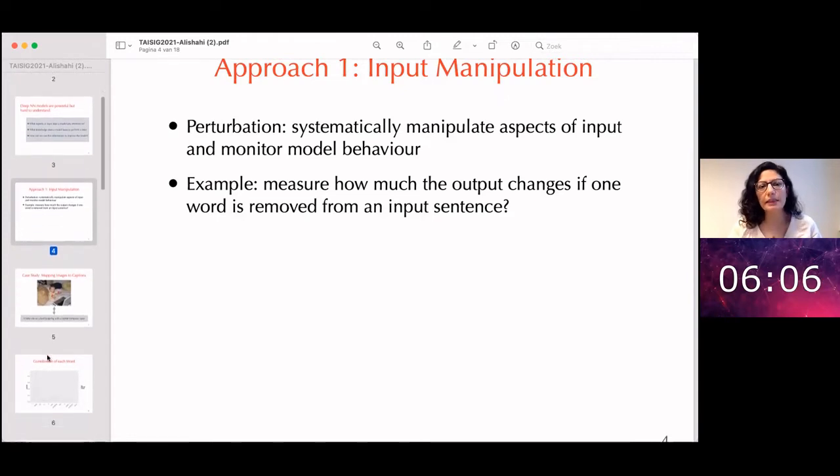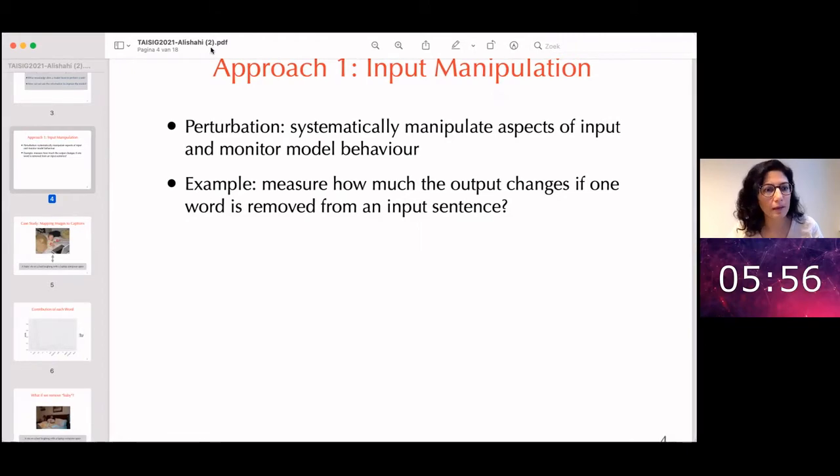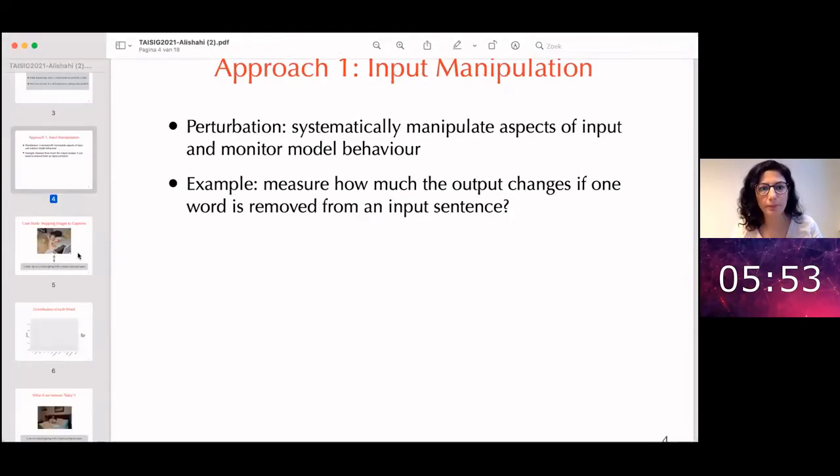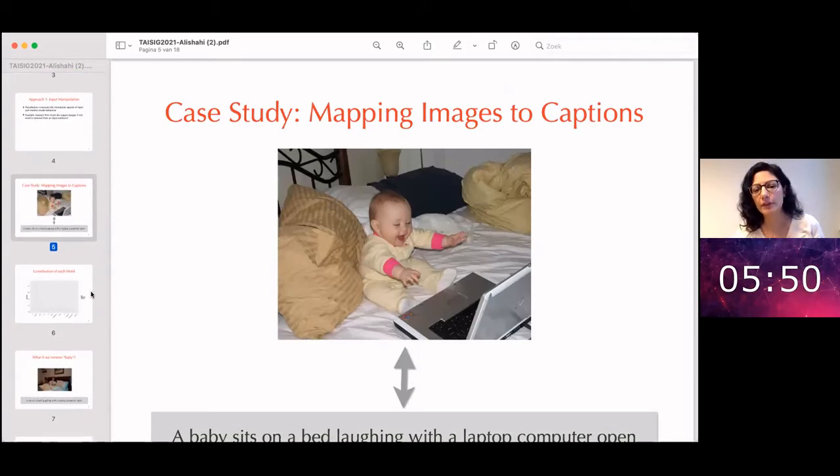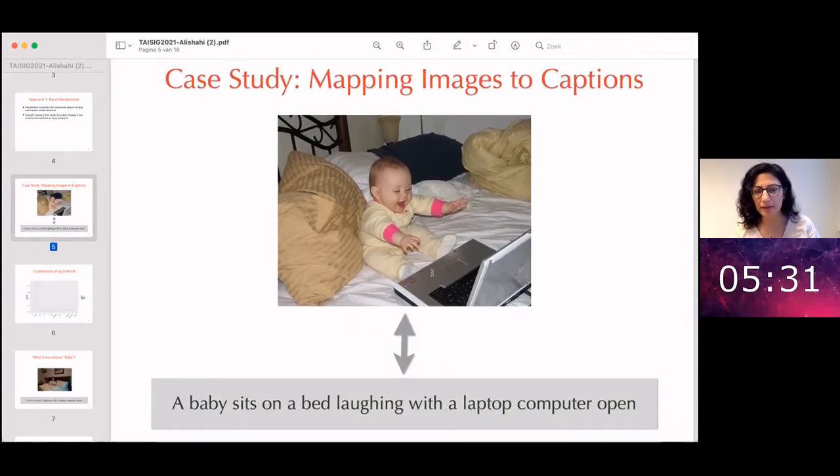As an example, let's say that we want to measure how much the output of a natural language processing model changes if you remove one word from an input sentence. As an example of a task, let's assume that we train a model that learns to map images to captions. So if we give enough examples to the model, it can map this picture of a baby laughing and looking at the computer to the caption, a baby sits on a bed laughing with the laptop computer open.